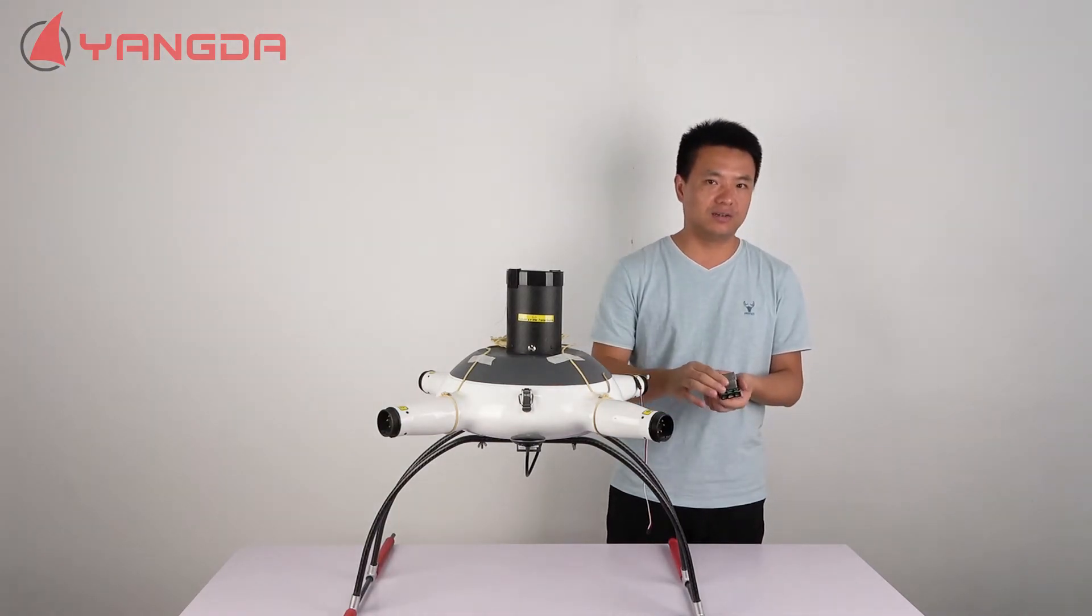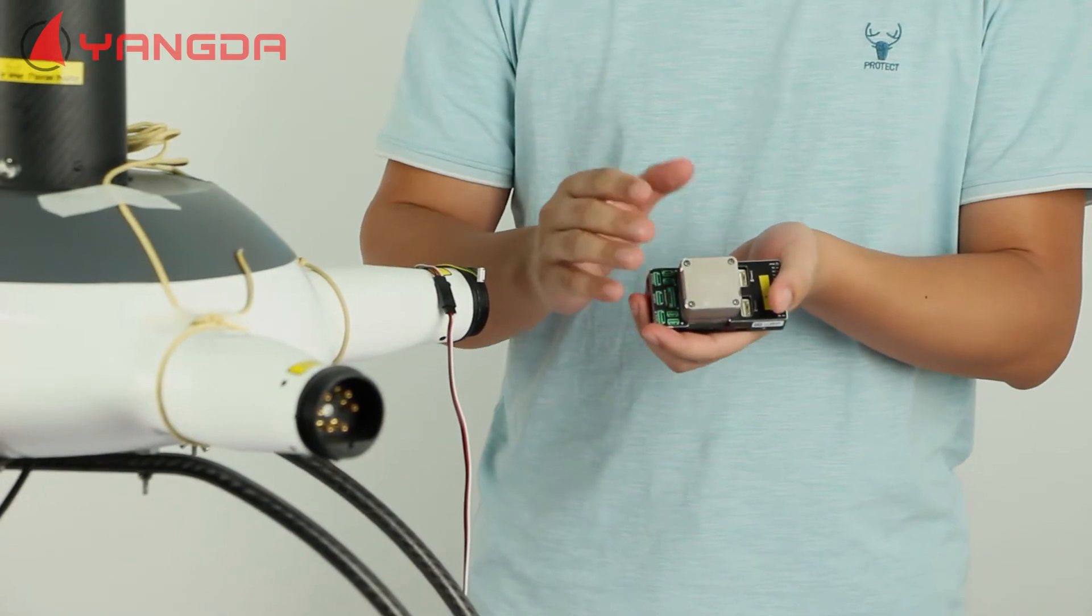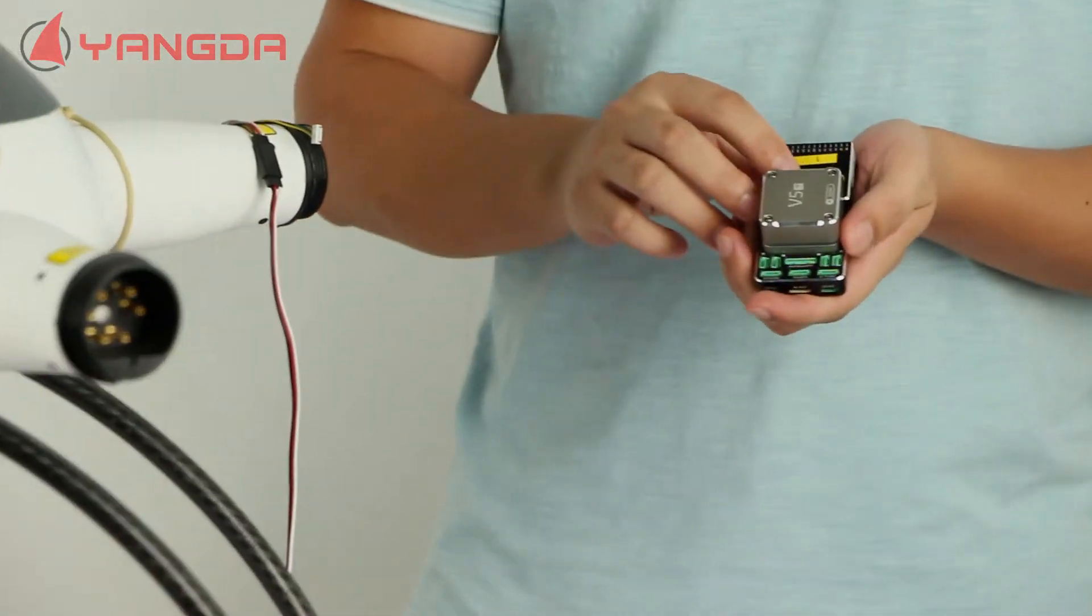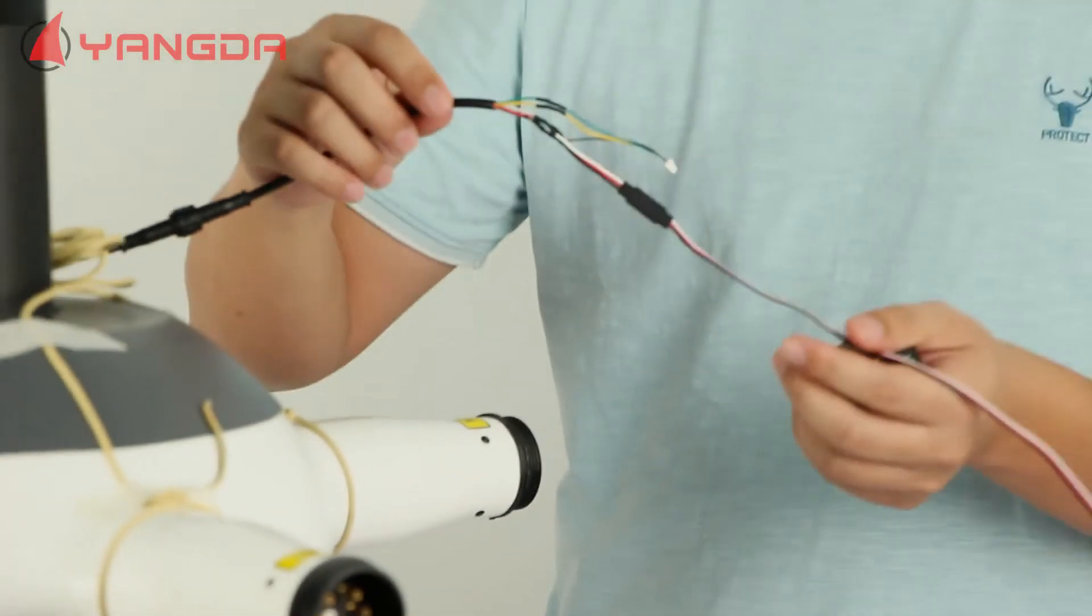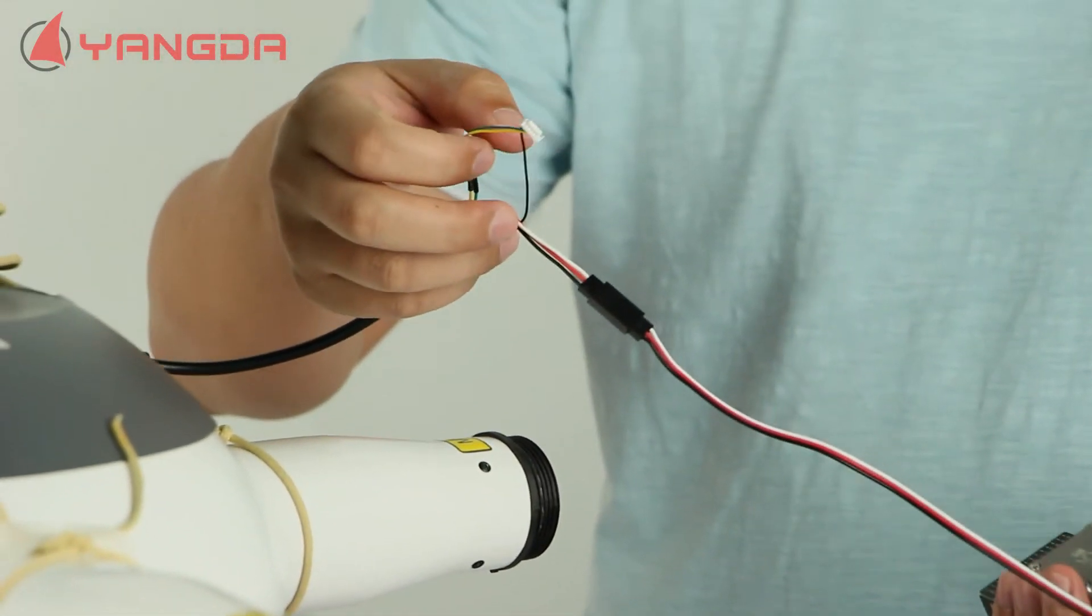In my hand is the V5 Plus flight controller. I am using it on this quadcopter. And this is the cable of the Saver parachute. You can see there are two connectors.